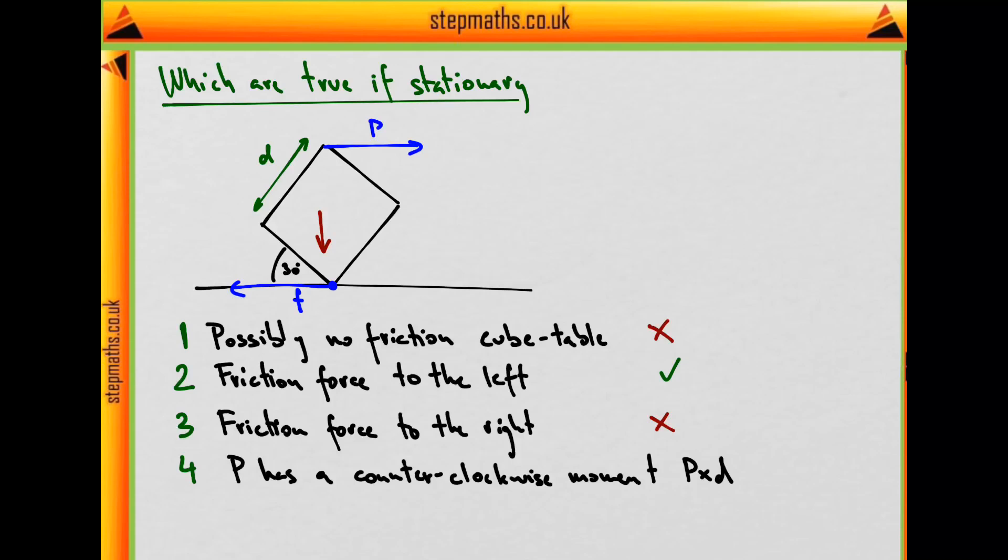But both the direction and the magnitude are wrong. The magnitude would be P times this whole distance here, not just D, but the whole distance, that's root two times D. The force is actually clockwise, whereas the moment, or the torque, is always perpendicular to both the distance and the force.